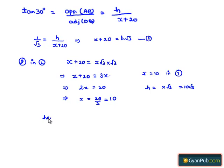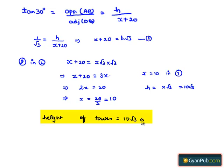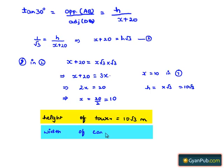Therefore, the height of the tower AB is 10 root 3 meters, and the width of the canal is x equals 10 meters.